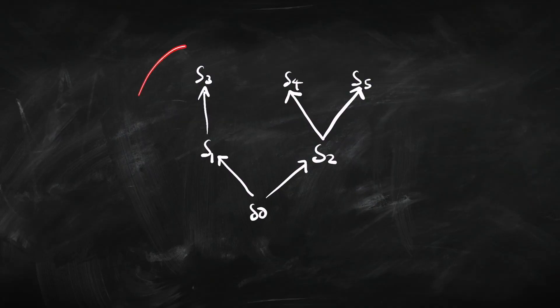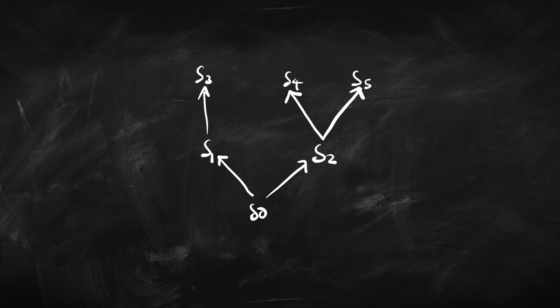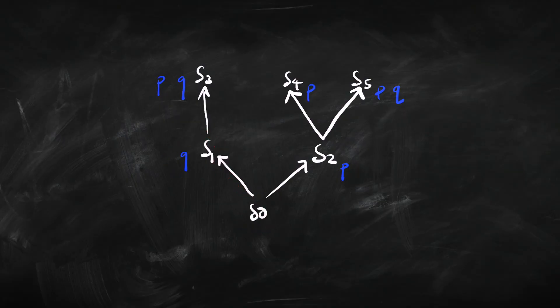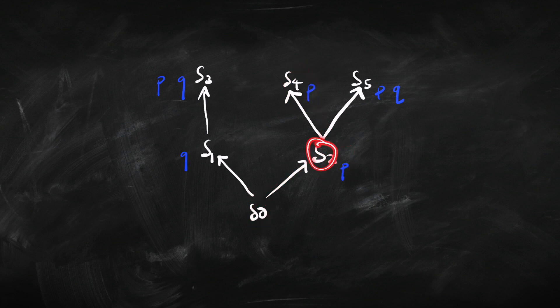Putting that idea together, we get a structure like this. Here's where we start off, in our starting state S0, where we don't know a lot. The investigation might go one way and end up here, or go another way with another branch point leading to further states. Along different paths we might learn different things — if we go this way we find out Q, this way we find out P, and so on. Going that way we find Q and also P.